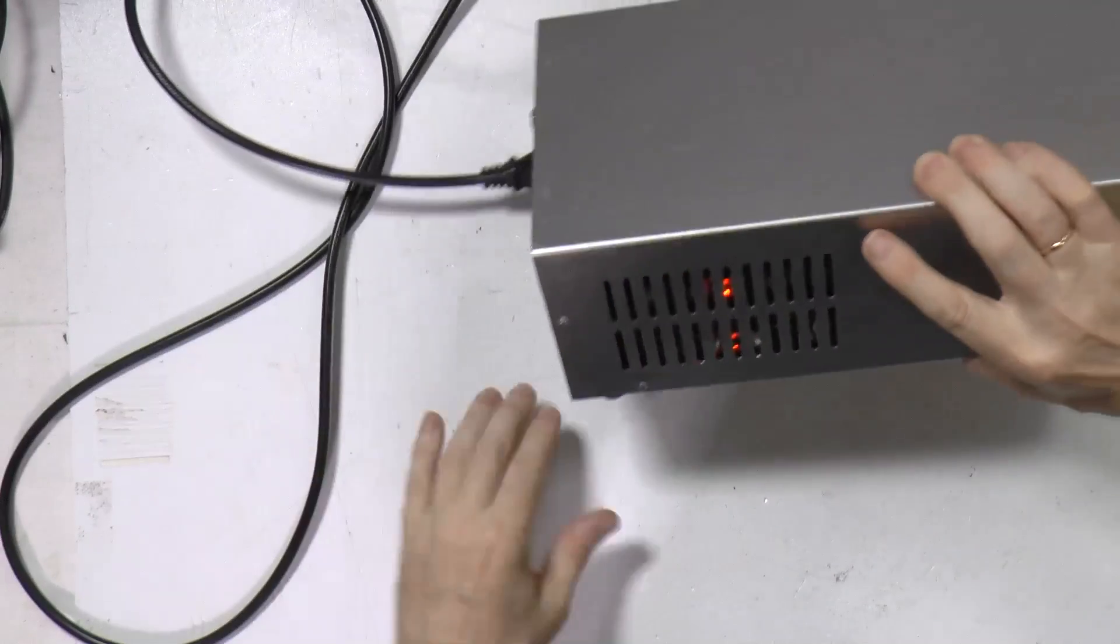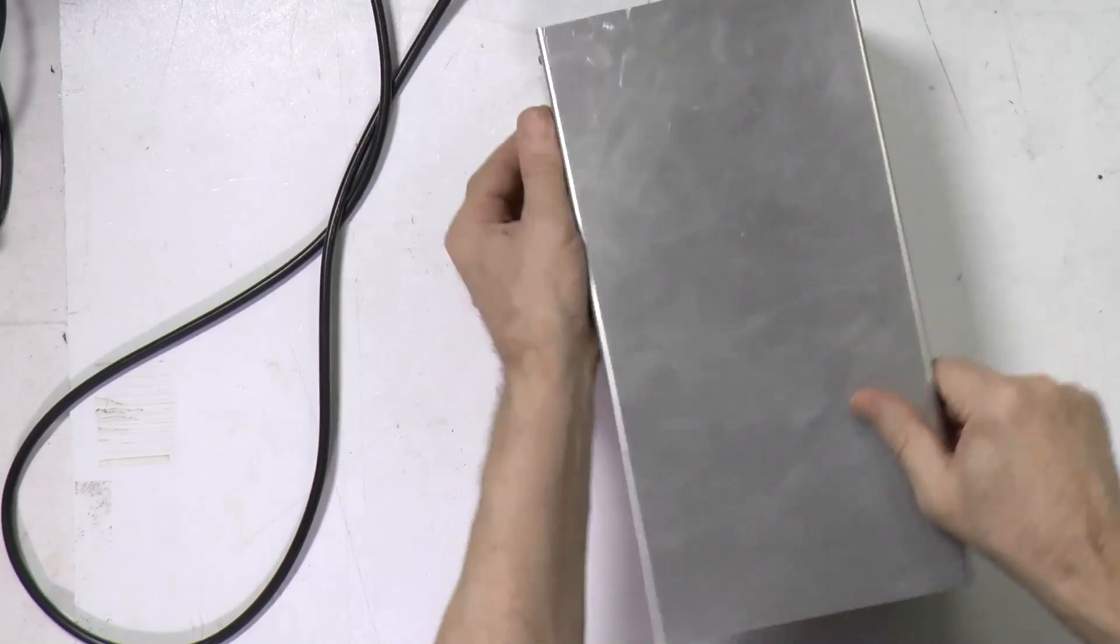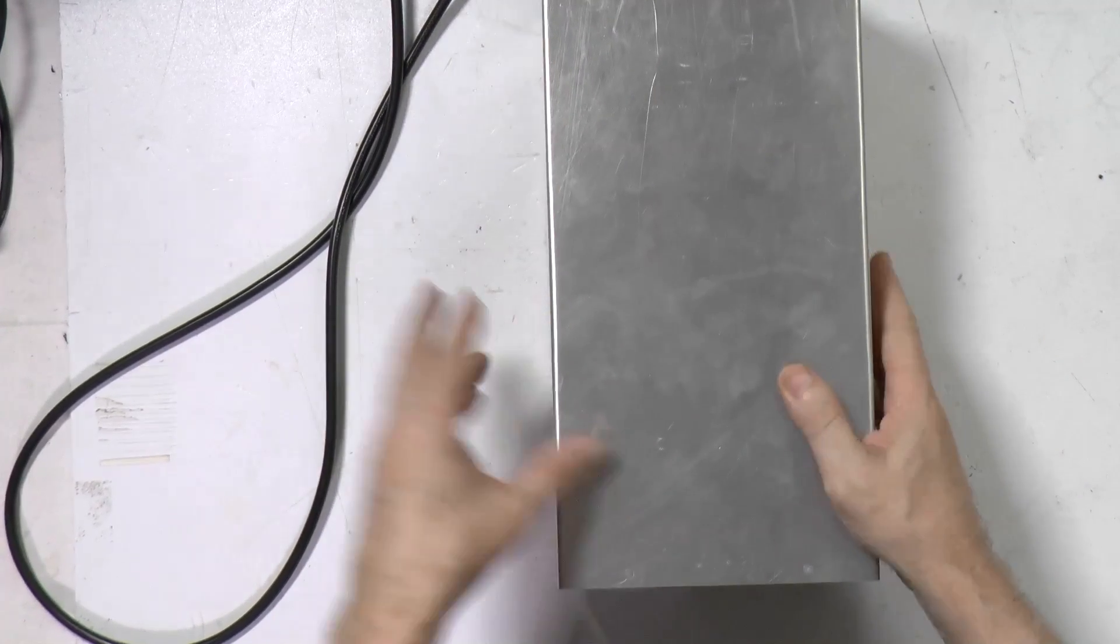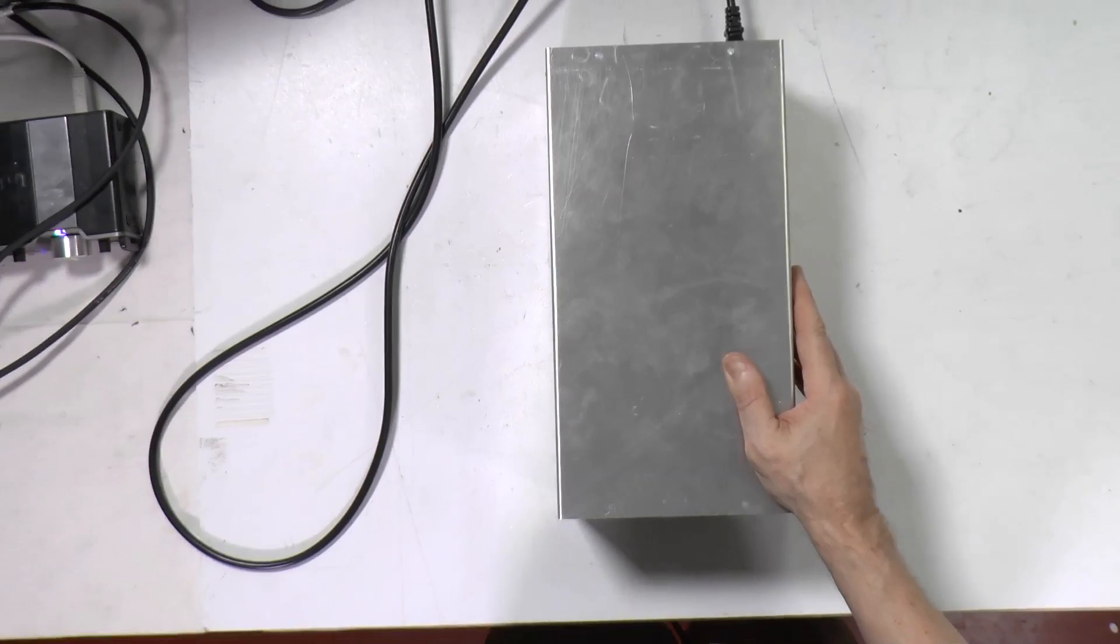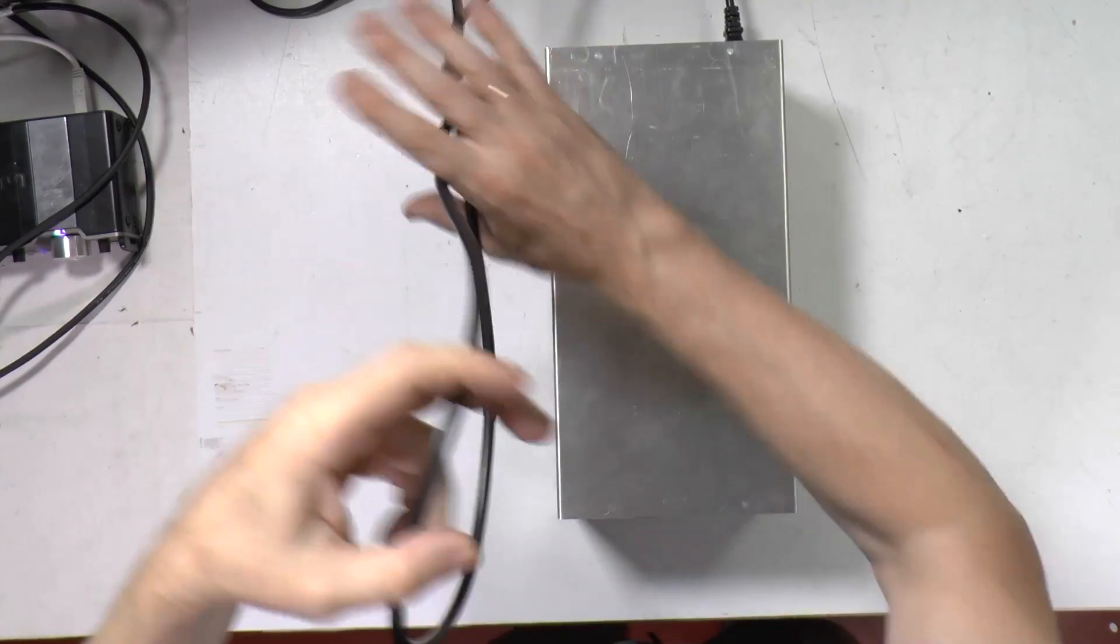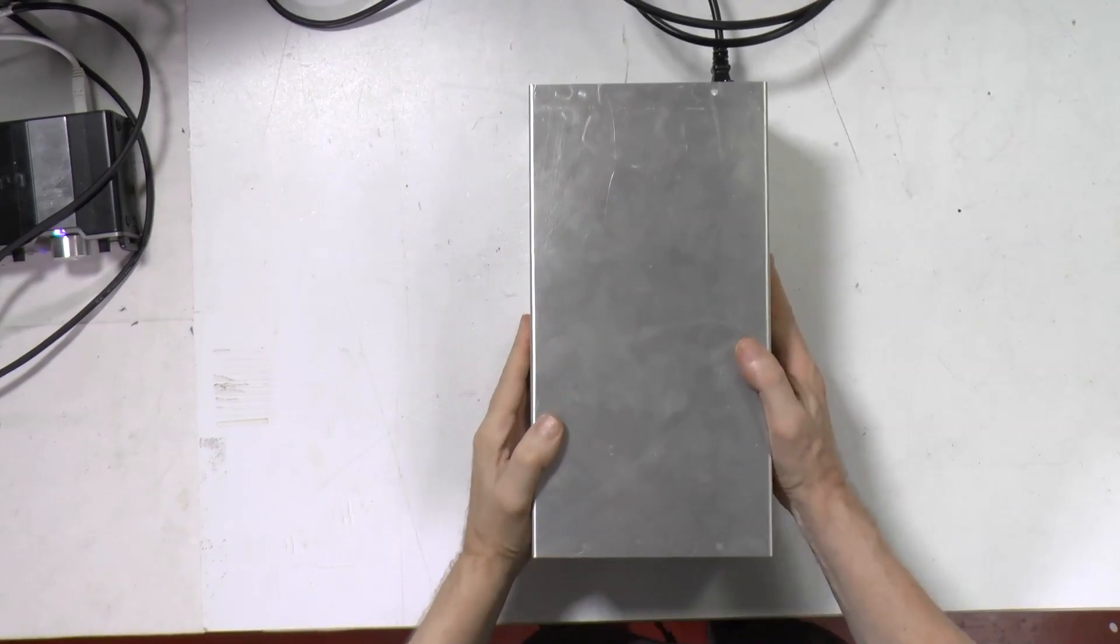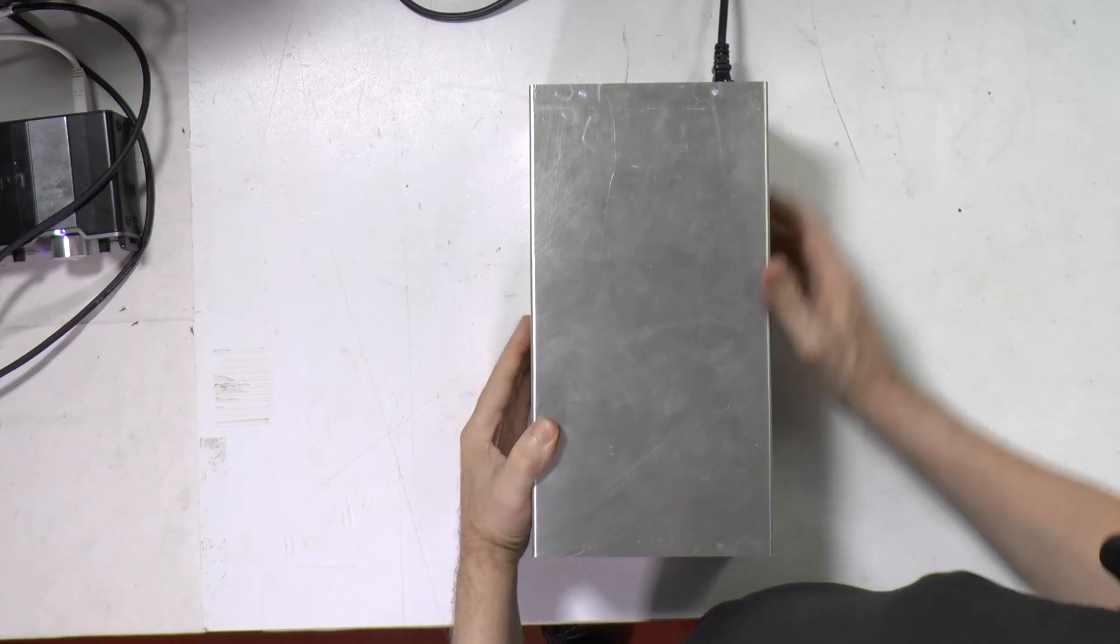In active speaker systems then in a crossover you can add a little bit gain for the tweeter and get back all those losses what we have in general when you use the full bandwidth.